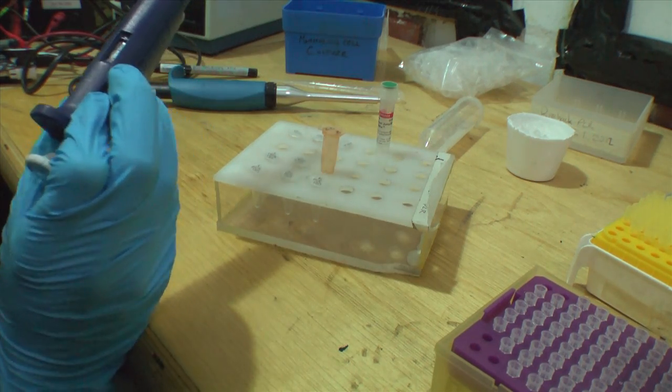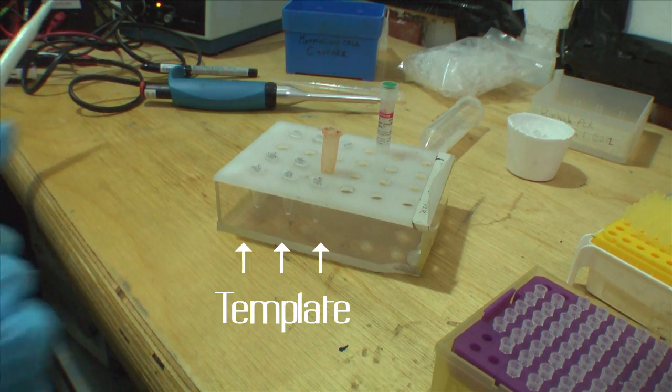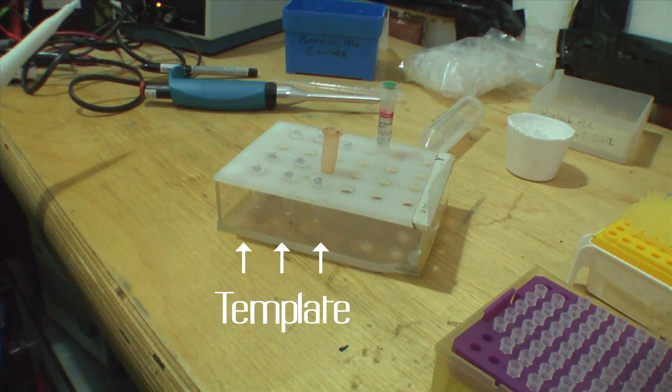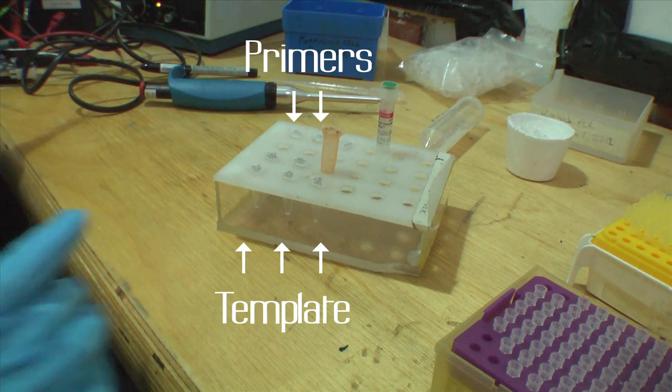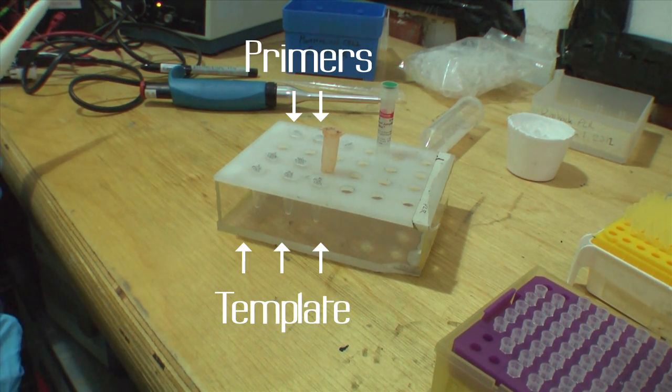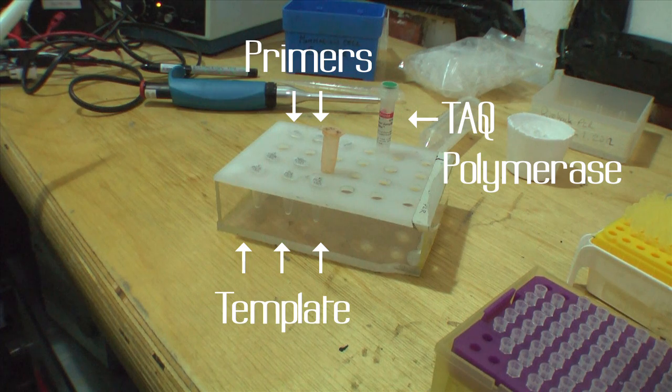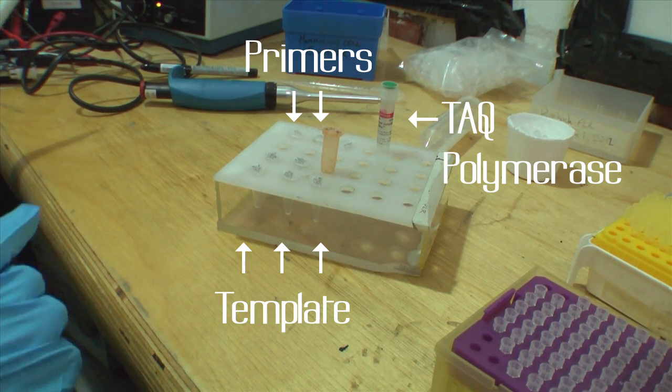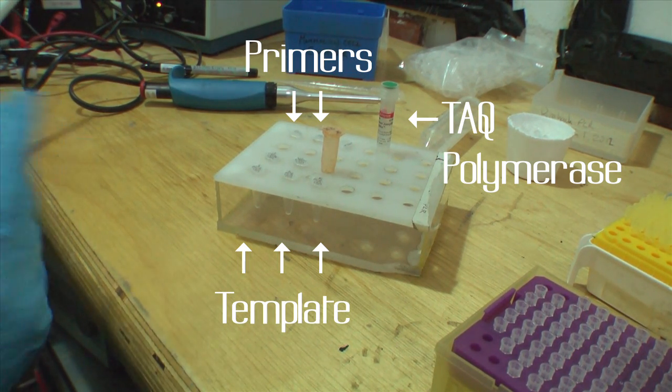PCR has got certain ingredients. You've got the template, which is the DNA we've got dissolved. Then you've got primers, which are what actually isolates each end of the DNA sequence you want to get. You've got TAC polymerase, which actually amplifies the bit you want to get, so we get lots of it. And then there's just water for dilution.